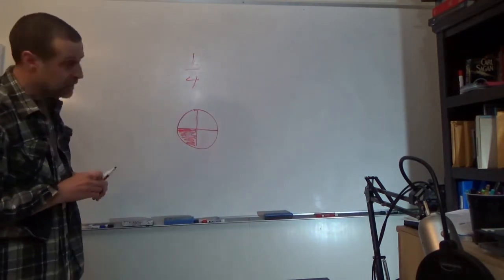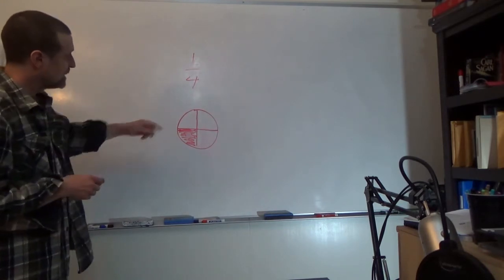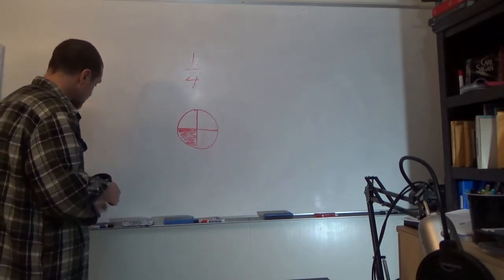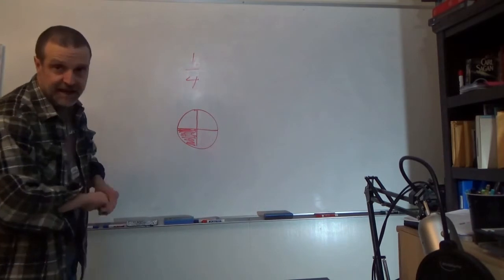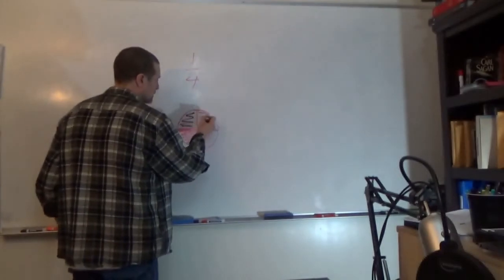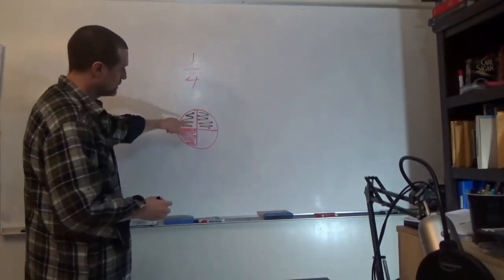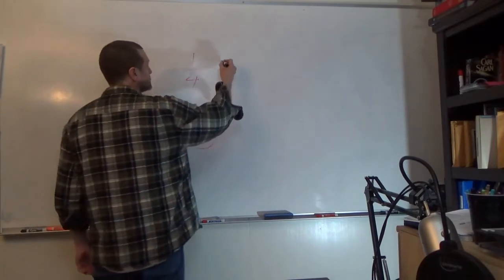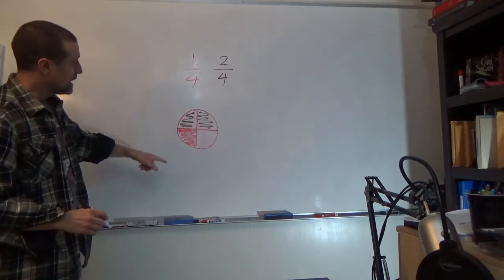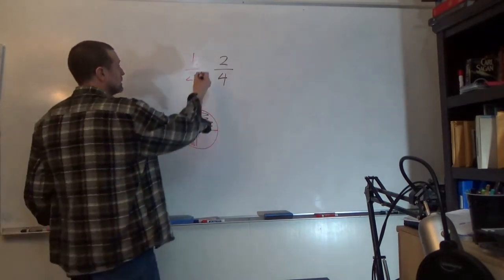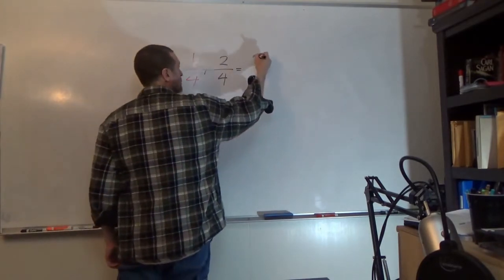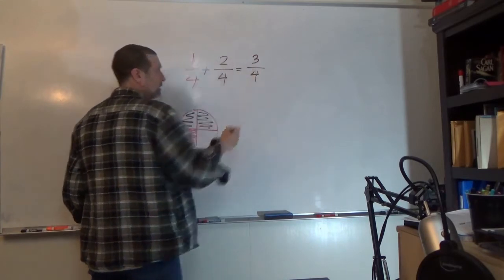Something that's worth noting here is that what if I ate one-fourth of the pizza, and then I put it in the refrigerator, and the next day I ate two more pieces? Well, those two brown pieces, those are two out of the four pieces, and the total amount of pizza that I ate is one plus two, three out of four.